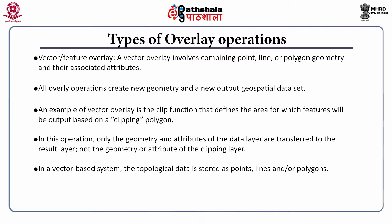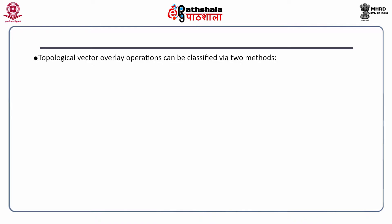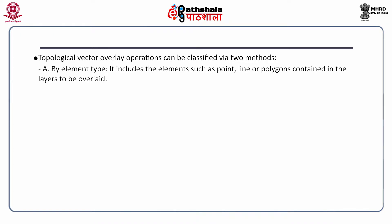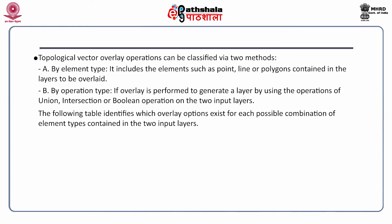In a vector-based system, the topological data is stored as points, lines and/or polygons. Topological map overlay operations allow the polygon features of one layer to be overlaid on the polygon, point or line features of another layer. The topological vector overlay operations can be classified by two methods: the first is by element type and the second is by operation type. The element type includes elements such as point, line or polygons contained in the layers to be overlaid. In the operation type, if overlay is performed using operations of union, intersection or boolean operation on two input layers, we call it overlay by operation type.